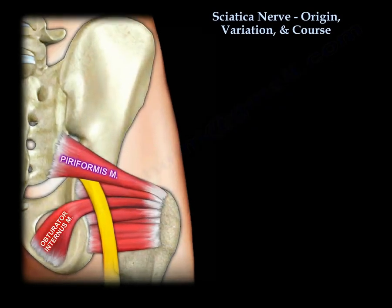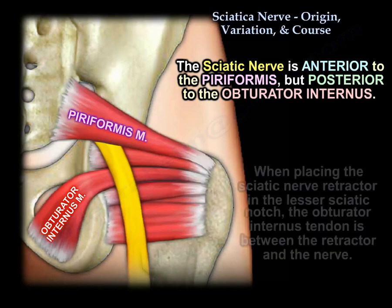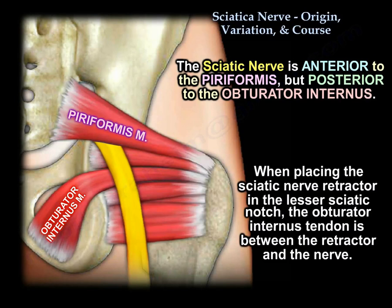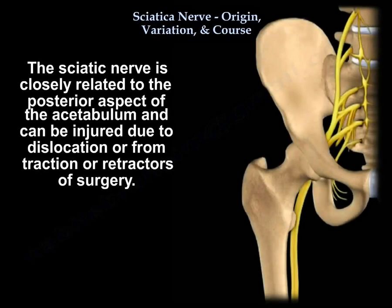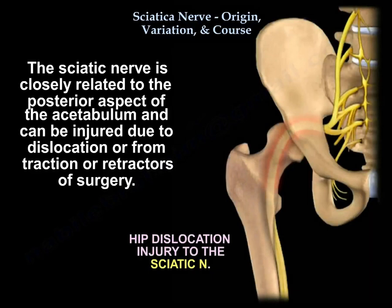The nerve is anterior to the piriformis but posterior to the obturator internus. With a sciatic nerve retractor in the lesser sciatic notch, the obturator internus tendon is between the retractor and the nerve. The nerve is also closely related to the posterior aspect of the acetabulum and can be injured from dislocation, traction, or retractors during surgery.